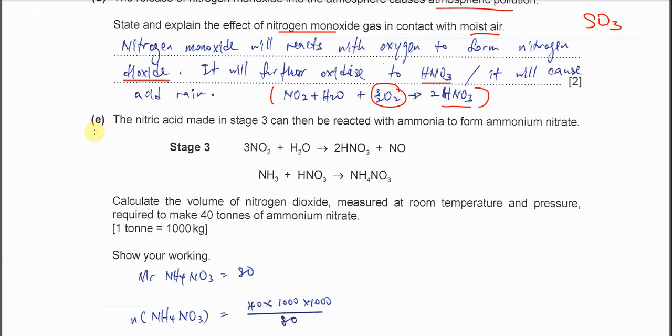Part E: In stage 3, nitrogen dioxide when it reacts with water will form HNO3. This is another way. When this HNO3 forms, then it will form another by-product NO.